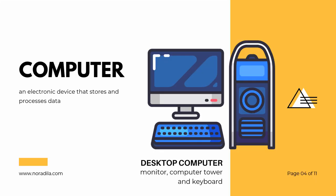To start off, what exactly is a computer? A computer is an electronic device that stores and processes data. It is used for a variety of purposes ranging from browsing the web, writing documents, editing images and videos, creating applications, playing video games and other activities. A desktop computer consists of a monitor, computer tower, and a keyboard, and can include other devices such as a mouse and speaker.